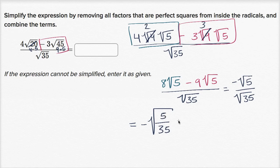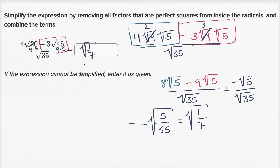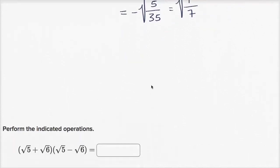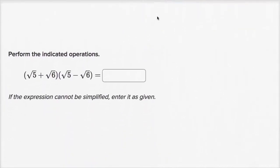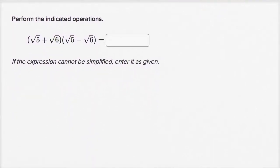Both the numerator and the denominator are divisible by five, so we divide them both by five: the numerator becomes one and the denominator becomes seven. So we can view this as the negative square root of one-seventh. And we are all done. Let's do another one of these — these are strangely fun.